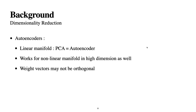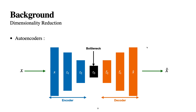For a linear manifold, implementing PCA and autoencoder gives the same result, but for autoencoder the weight vectors may not be orthogonal to each other. Here is the basic structure of autoencoder: we try to make x and x-hat the same. The dimensionality reduction step is called the encoder, and the step where we increase dimensionality is the decoder. This middle part is the bottleneck, and the difference between x and x-hat is called reconstruction loss.